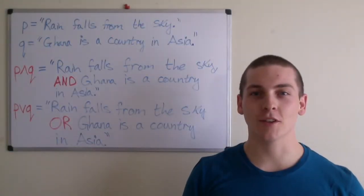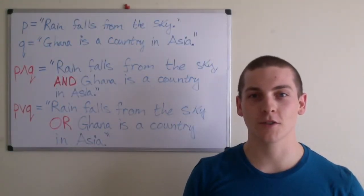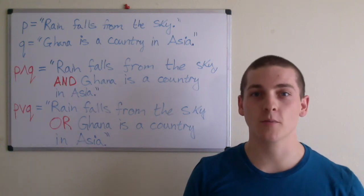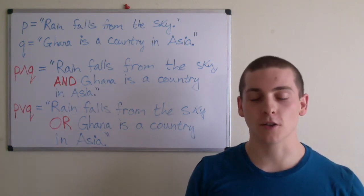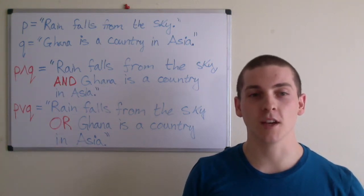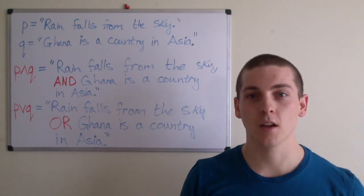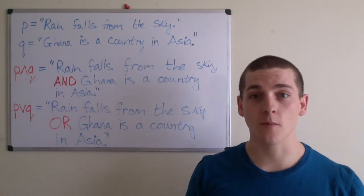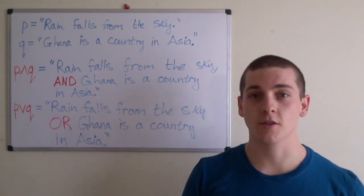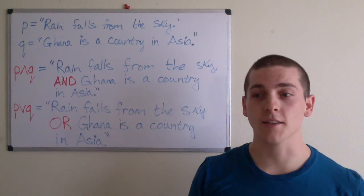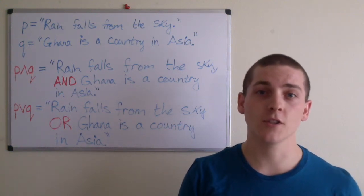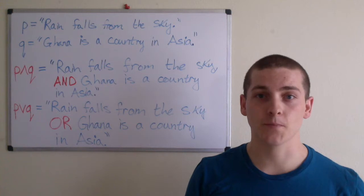In this video, I'll be introducing the concept of composite propositions. Just like regular propositions, composite propositions are declarative statements with a verifiable truth value. Composite propositions are made up of sub-propositions, and in this video we're going to talk about the conjunction and the disjunction.